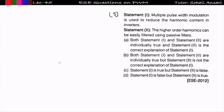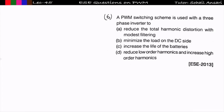The fifth problem: multiple pulse width modulation is used to reduce harmonic content in an inverter — correct. Higher order harmonics can be easily filtered using a passive filter — also correct. Both statements are correct, but they are not correct explanations of each other, so option B is correct.